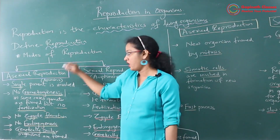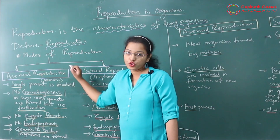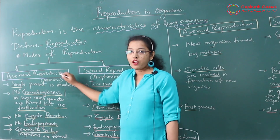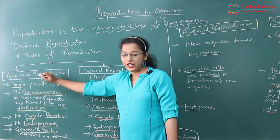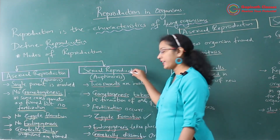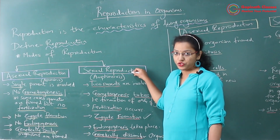Modes of reproduction — there are two types of modes of reproduction: the first is asexual reproduction and the second one is sexual reproduction.